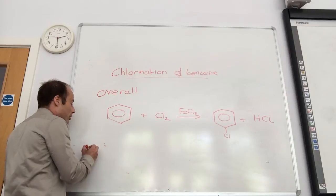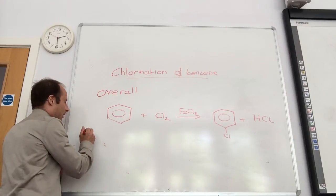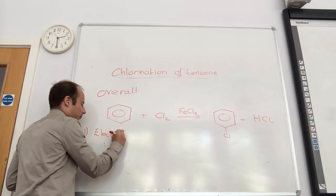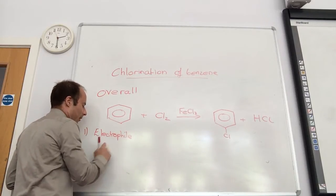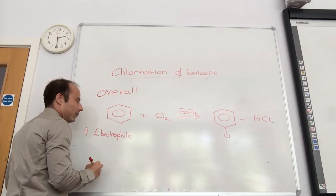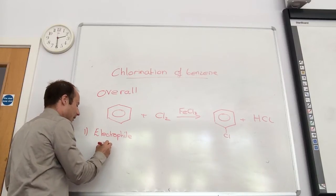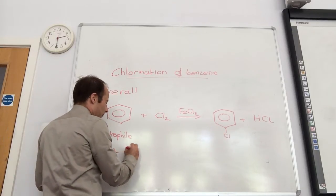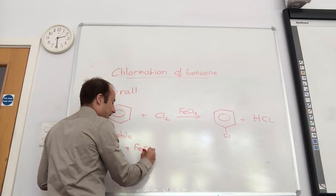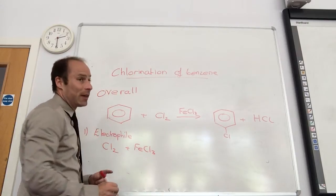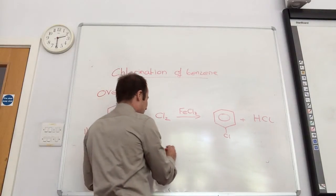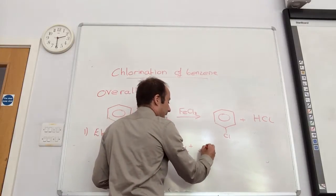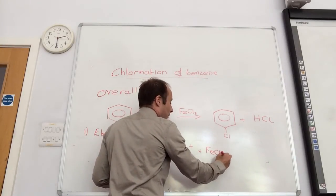So first of all, I'm going to make my electrophile. So step one, generate the electrophile. So Cl2 is going to meet FeCl3, which is my catalyst. And it makes Cl+, which will be my electrophile, and FeCl4-.